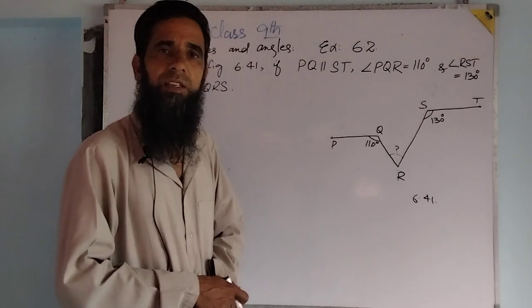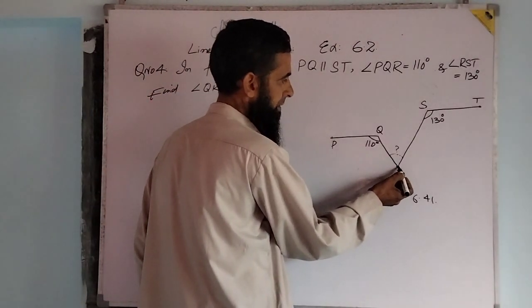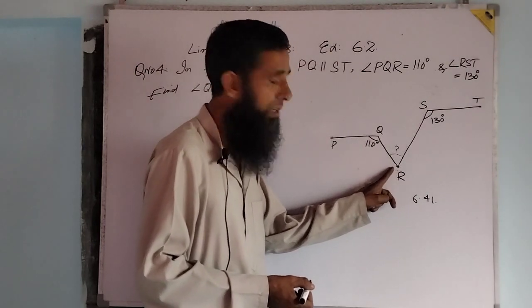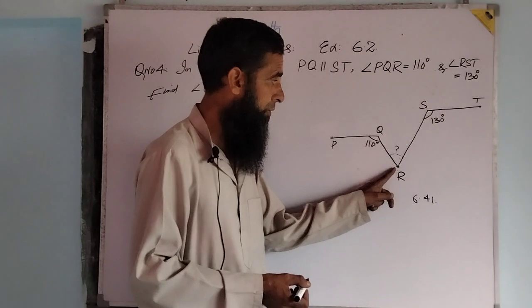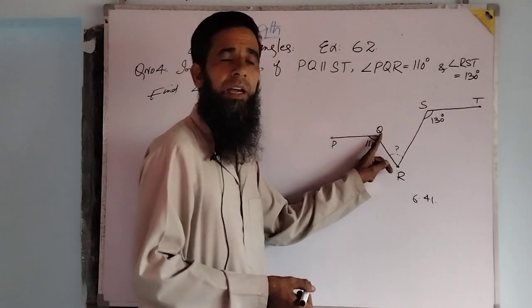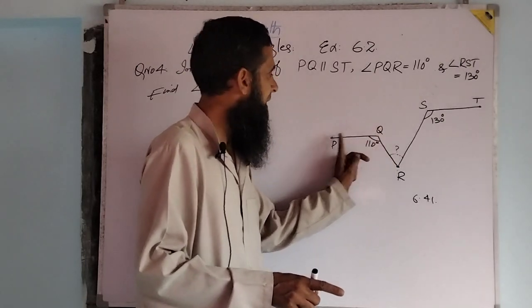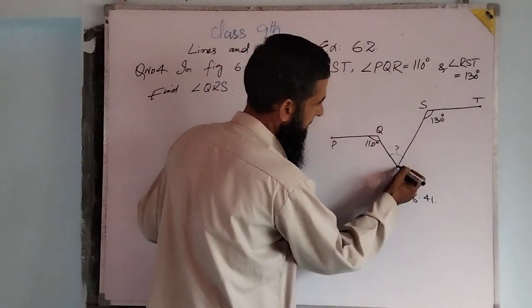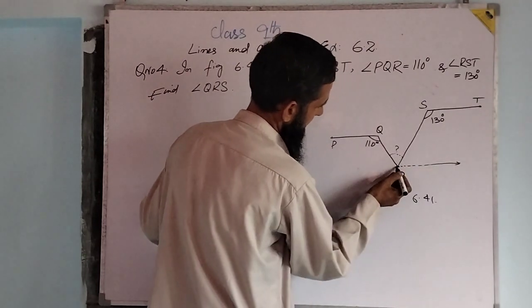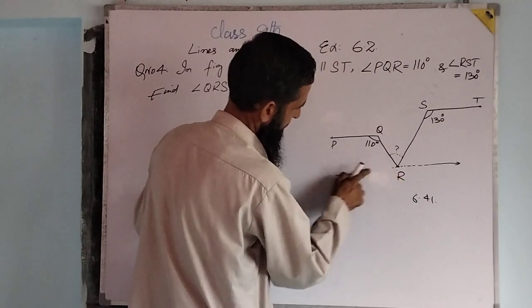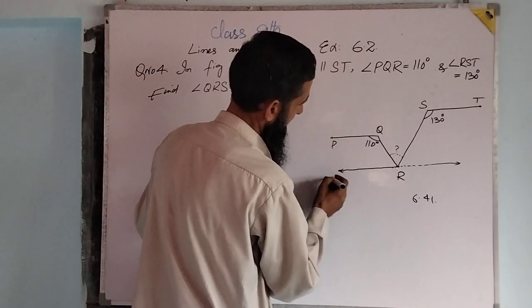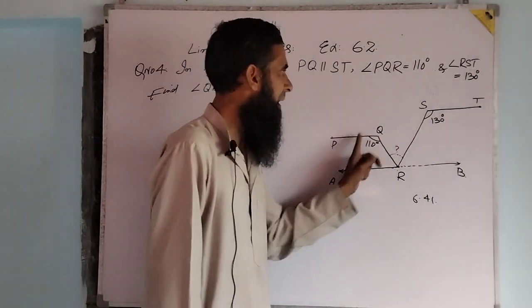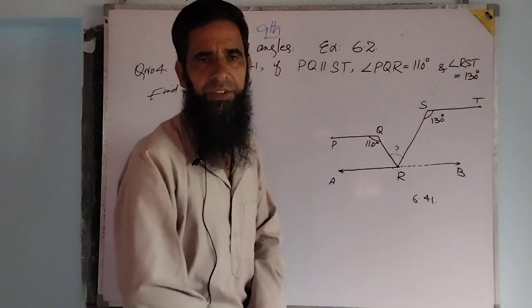Dear students, we will do a small construction. We have here point R and we have here line PQ. We can draw a unique line from point R which is parallel to PQ. As that particular constructed line is parallel to PQ, it is also parallel to ST because PQ is parallel to ST. Say this is the line AB which is parallel to PQ. As it is parallel to PQ, implies AB is parallel to ST.